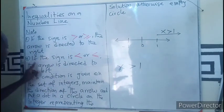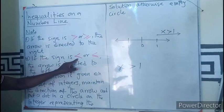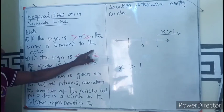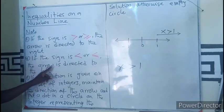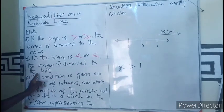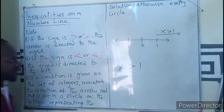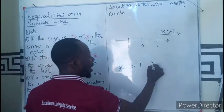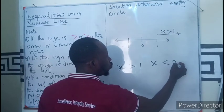In another sense, if the sign is less than or less than or equals to, the arrow is going to be directed towards the left. As in this case, x is less than two.